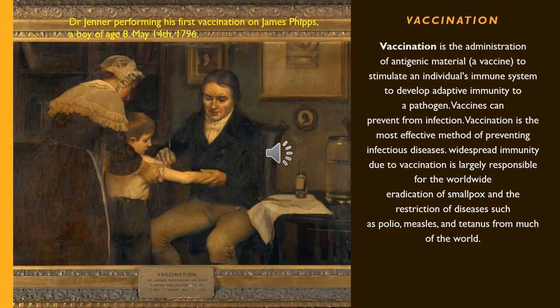Vaccination is the administration of antigenic material to stimulate an individual's immune system to develop adaptive immunity to a pathogen. Vaccines can prevent infection. Vaccination is the most effective method of preventing infectious diseases. Widespread immunity due to vaccination is largely responsible for the worldwide eradication of smallpox and the restriction of diseases such as polio, measles, and tetanus from much of the world.